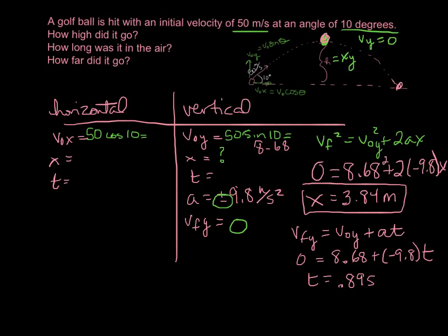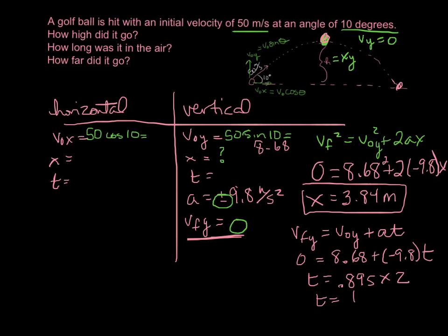Solving that, we find t equals 0.89 seconds. But we have to be careful — our final velocity is zero only at the top, so that's only half the total time. It takes 0.89 seconds to get up and another 0.89 seconds to come down. Doubling 0.89, we get 1.77 seconds total time in the air.